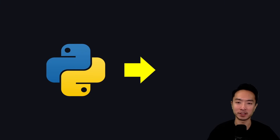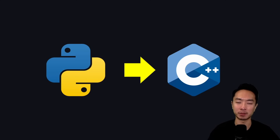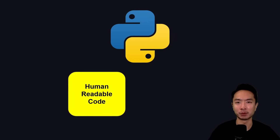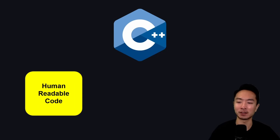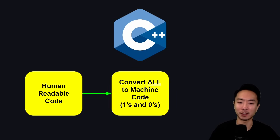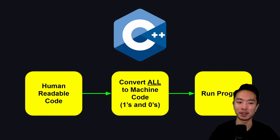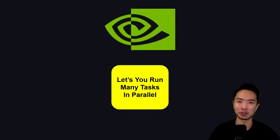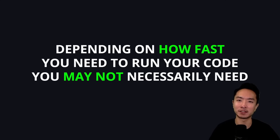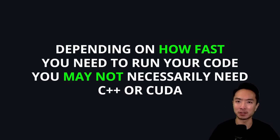When performance is important, we may want to convert Python code to C++. Python works line-by-line — it converts human-readable code to machine code one line at a time. C++ instead compiles all the machine code at once before running, which is how it achieves greater efficiency. Another option, especially for computer vision tasks, is CUDA, which lets you run many operations in parallel. Depending on how fast you need to run your code, you may not necessarily need C++ or CUDA — it all depends on your application.